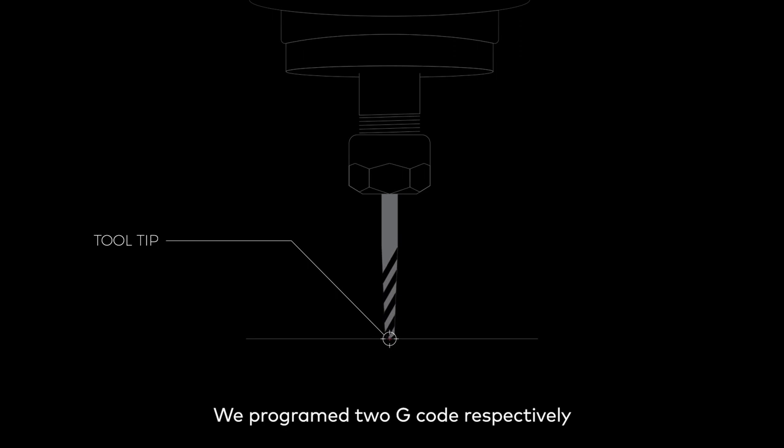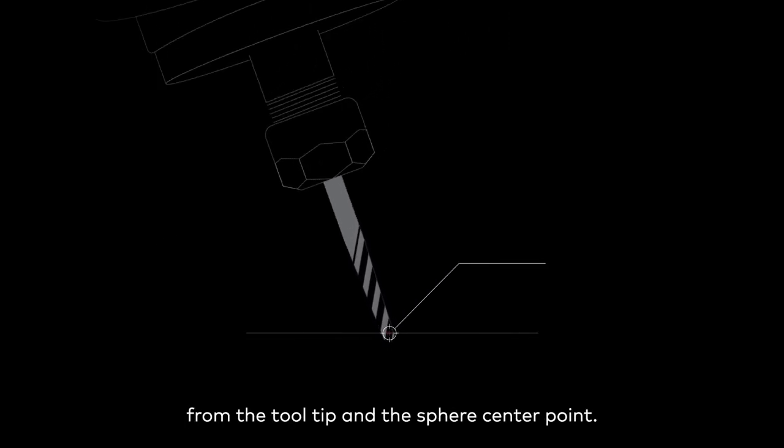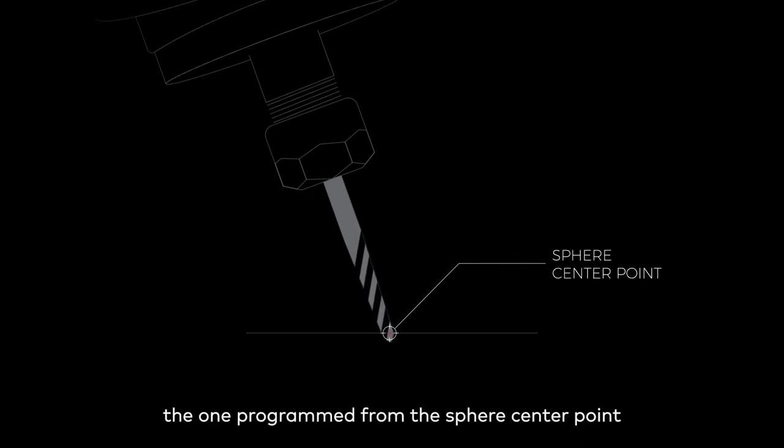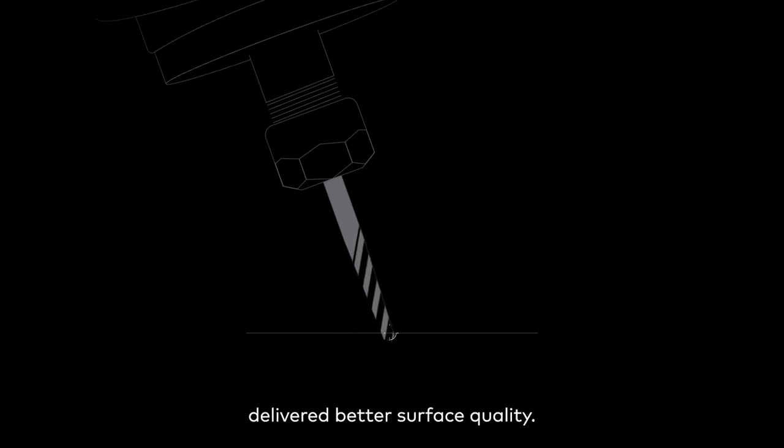Comparison test one: wavy surface cutting programmed with different G-code. We programmed two G-codes respectively from the tool tip and the sphere center point. It turned out that the one programmed from the sphere center point delivered better surface quality.